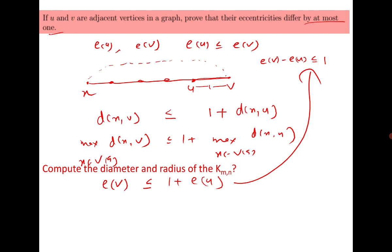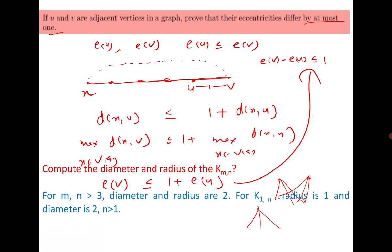We need to consider different cases based on the values of m and n. For example, in K_{2,3}, eccentricity is always 2, so both radius and diameter are 2. In K_{1,3}, radius is 1 and diameter is 2. In general: when m,n ≥ 2, radius and diameter are both 2; for K_{1,n}, radius is 1 and diameter is 2; for K_{1,1}, radius and diameter are both 1.